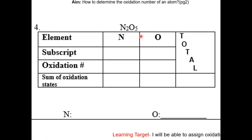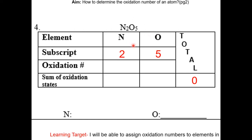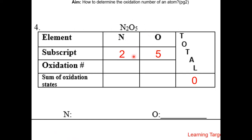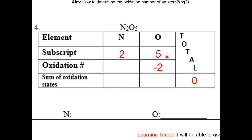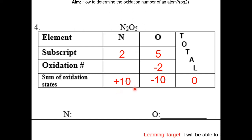Let's look at examples in the packet. For N2O5, the sum of oxidation numbers will be zero. Nitrogen has a subscript of two and oxygen has a subscript of five. Since nitrogen has multiple oxidation states, we look at oxygen first. Oxygen is −2, so the sum for five oxygens is −10. For the total to be zero, the sum for nitrogen must be +10. Since there are two nitrogens, each nitrogen has an oxidation number of +5.